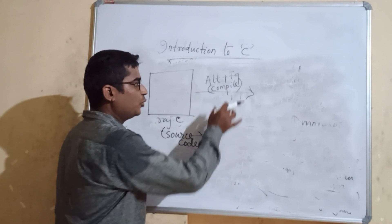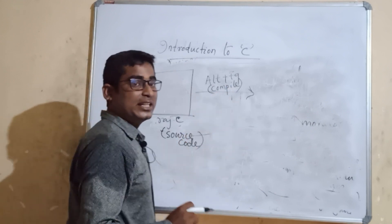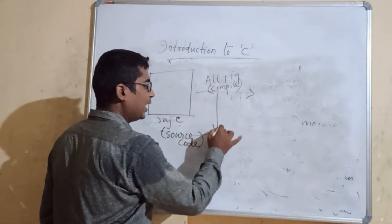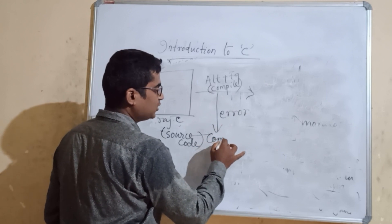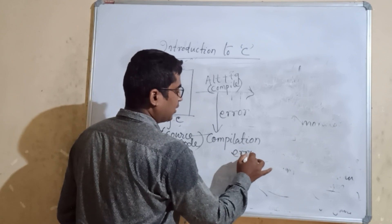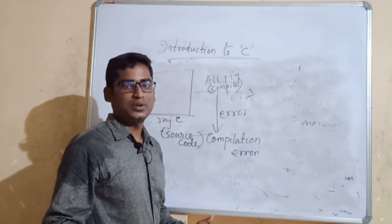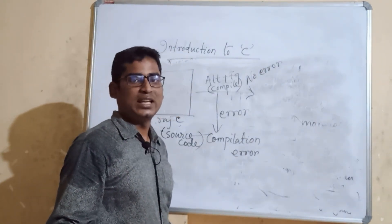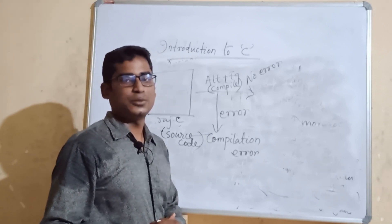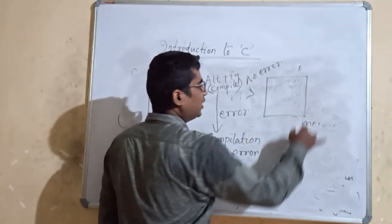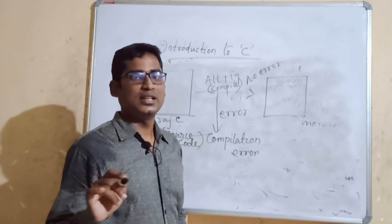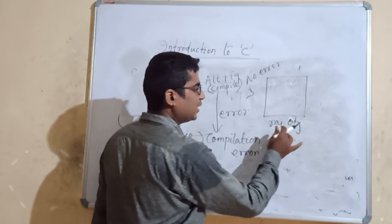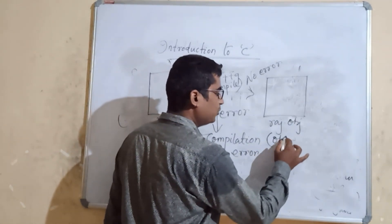During compilation, the compiler verifies the source code for errors, particularly syntax errors. If there is no error, the compilation proceeds. If there are no errors, an intermediate file called the object code is created — this is the compiled intermediate representation of your program.